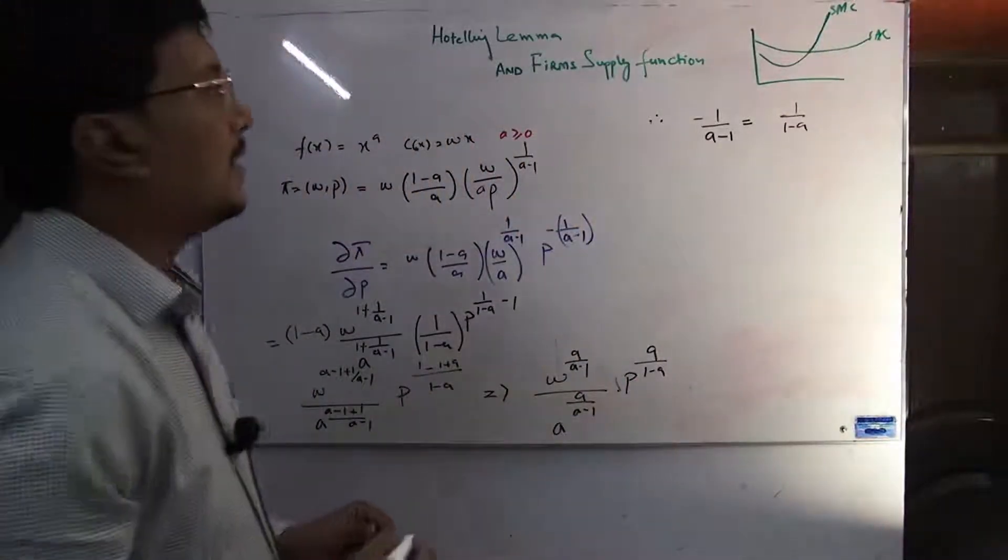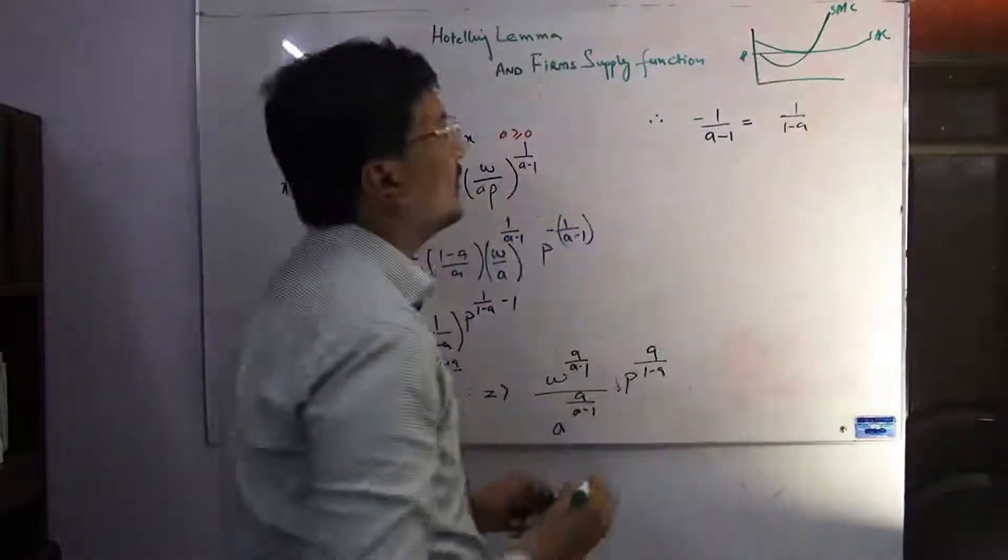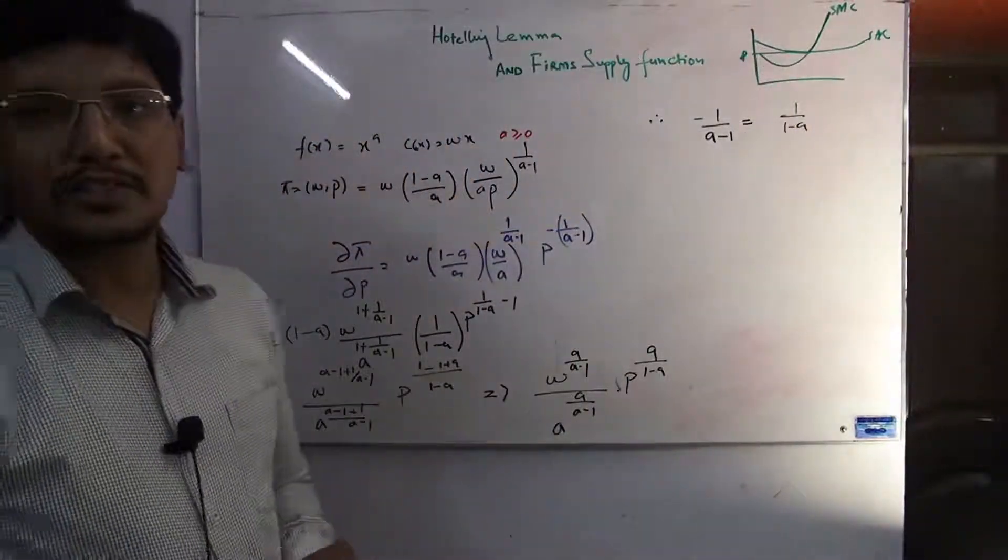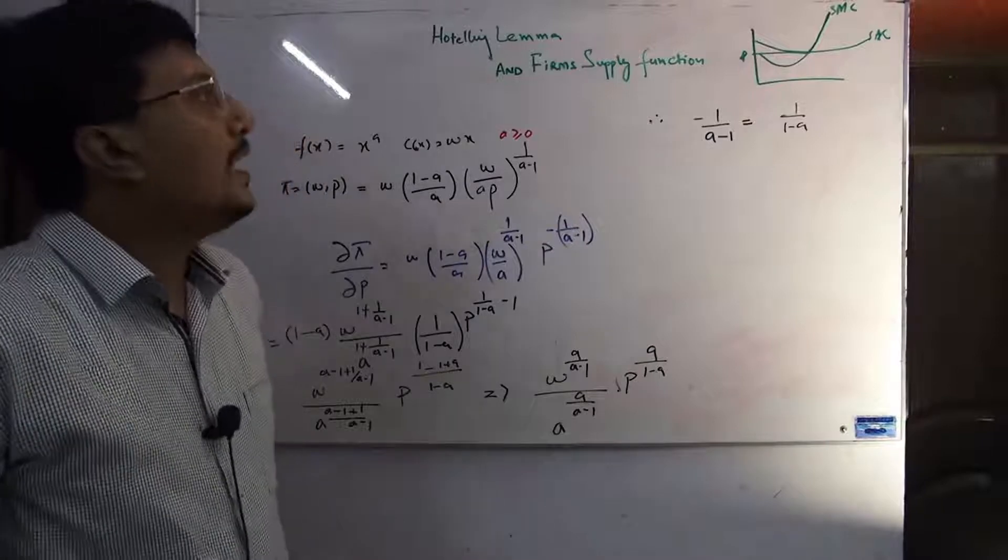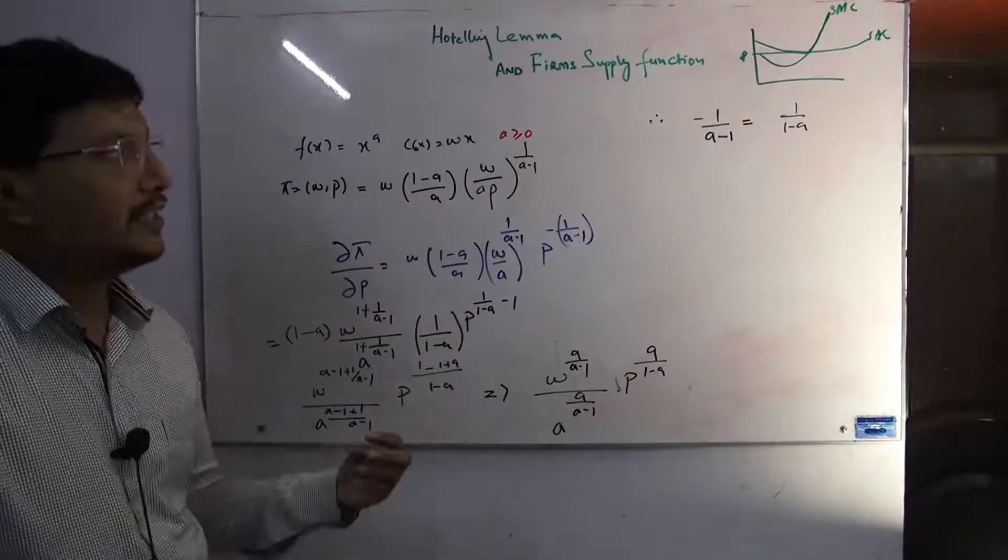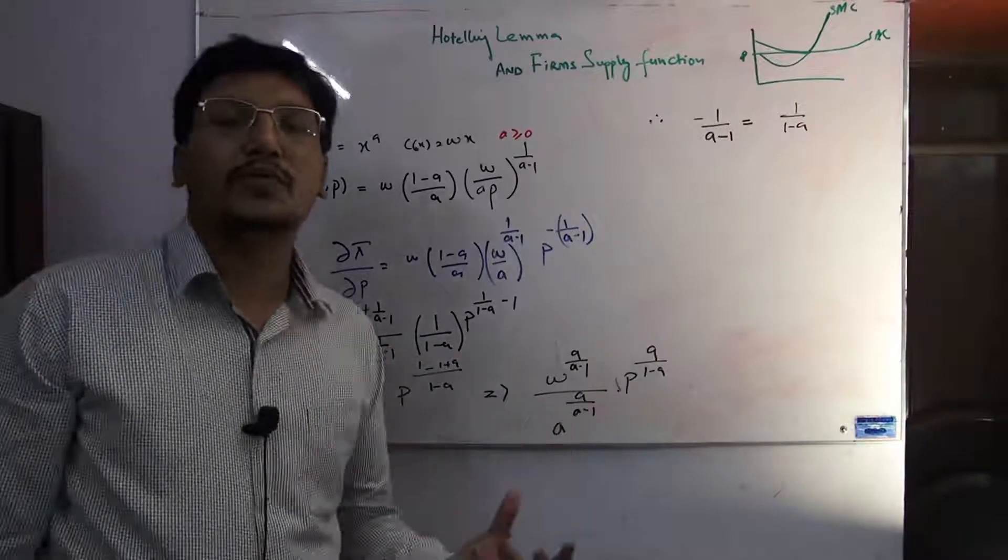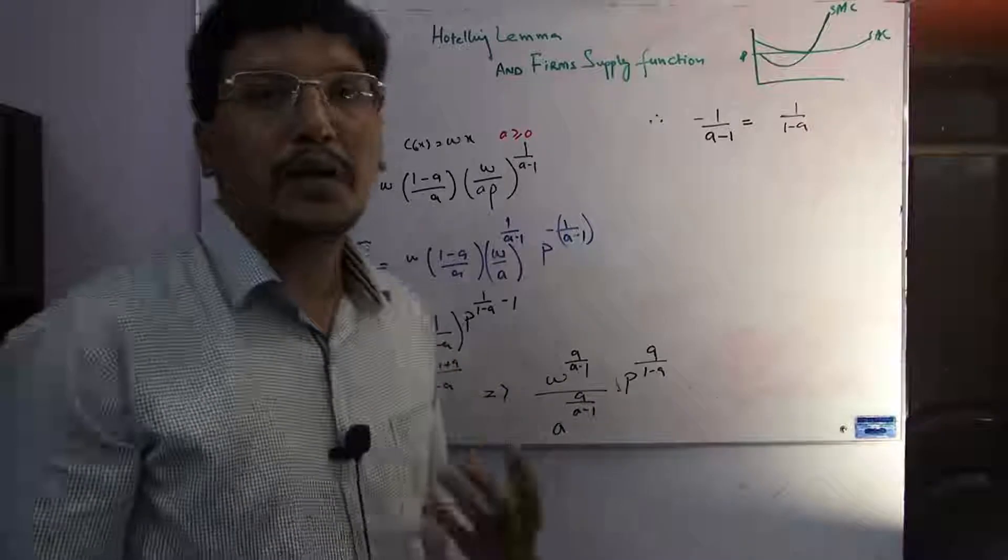From this price, the firm will start their supply of production. Now the question is that theoretically we have to understand it. We have seen that if the short-term marginal cost equals price, then we can also derive the firm's supply function.